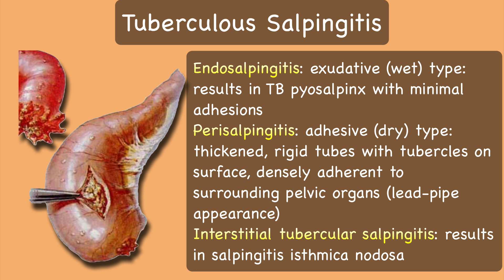The second type is called perisalpingitis. In the productive, i.e. adhesive form, which is found most frequently at laparoscopy or laparotomy, the tubes are studded with tubercles and are densely adherent to the surrounding organs. The tubercles are seen mostly near the attachment of the fallopian tube to the mesosalpinx. The tubal wall is thickened and nodular, and the fimbriae and the tube are slightly swollen. Eventually when the process starts healing, it results in calcification and fibrosis. There is a third type of tuberculosis salpingitis that is very rare, called interstitial tuberculosis salpingitis, which results in salpingitis isthmica nodosa.